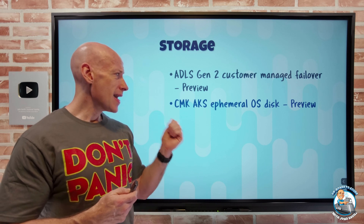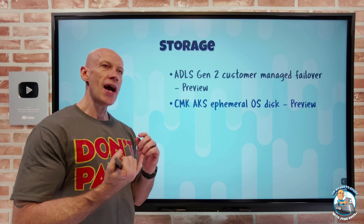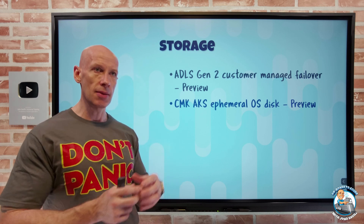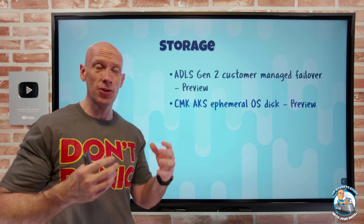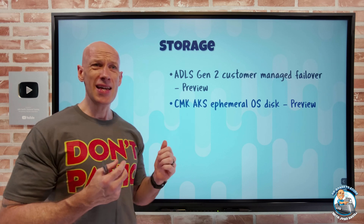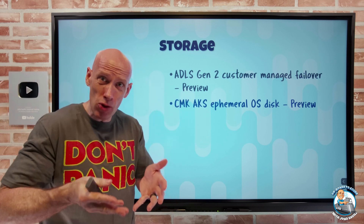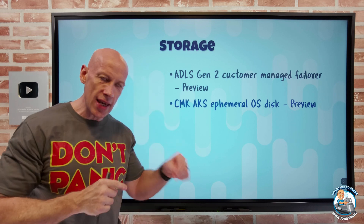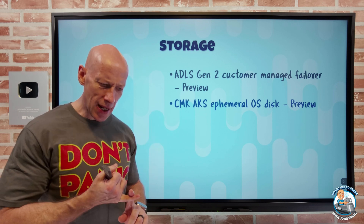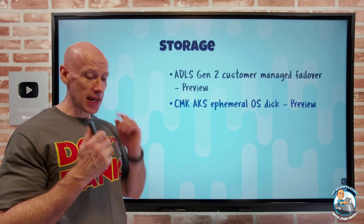For AKS using ephemeral OS disks — where a VM SKU with sufficient temporary or cache space is used instead of a managed disk for the OS — you can now use a customer managed key for encryption of that ephemeral disk running on the host. Ephemeral OS disks are faster, cheaper (no managed disk cost), and low latency, and since AKS is stateless, a real persistent disk isn't needed. This requires Kubernetes 1.24 or above, must be set at cluster creation, and the key lives in your Key Vault.